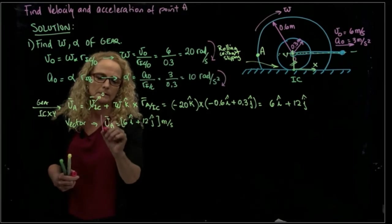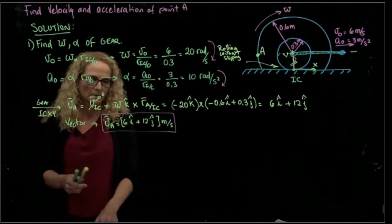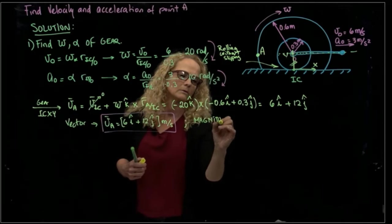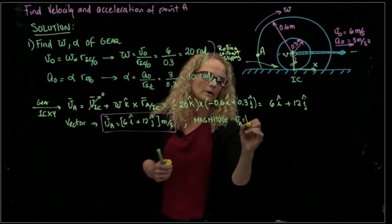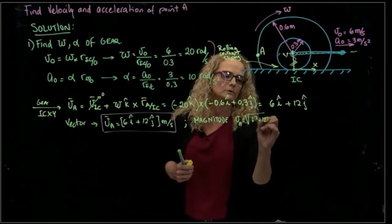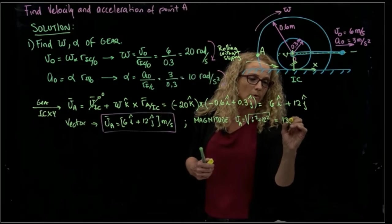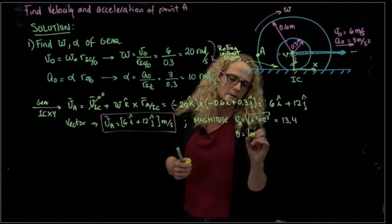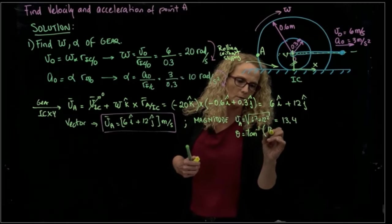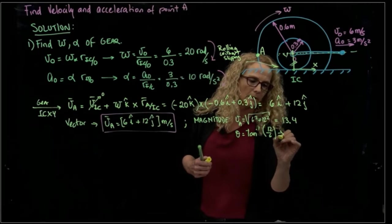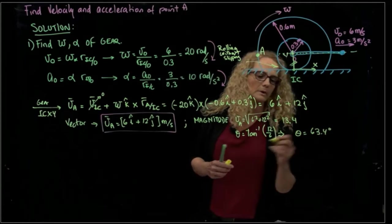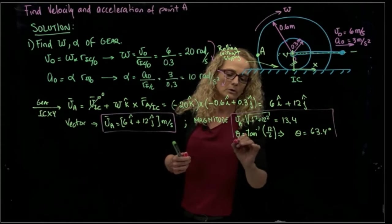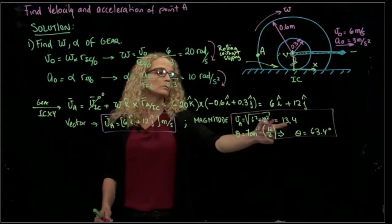And if I want to calculate it as in magnitude as direction and as magnitude, I can say that velocity of A is the square root of 6 squared plus 12 squared, which equals 13.4. And the direction will be the tangent, the inverse function of the tangent, 12 over 6, which gives me a value of 63.4 degrees. So I can always write the results either in vector form or as magnitude plus a direction.